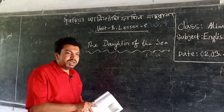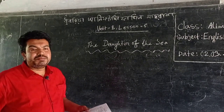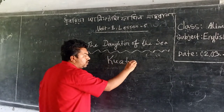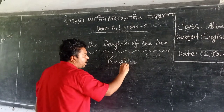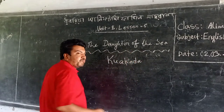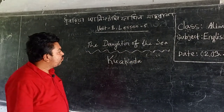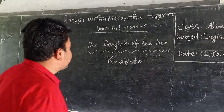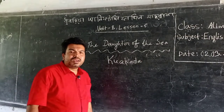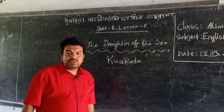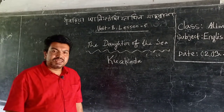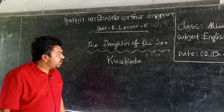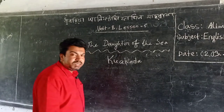Today I will describe a lesson about Kuakata — the Daughter of the Sea. You all know there are two seaports in Bangladesh: Chittagong and Mongla. We also have 120 kilometers of the world's largest sea beach, Cox's Bazar. Besides Cox's Bazar, there is another sea beach in our country, situated in Patuakhali district in Barisal division, and its name is Kuakata.